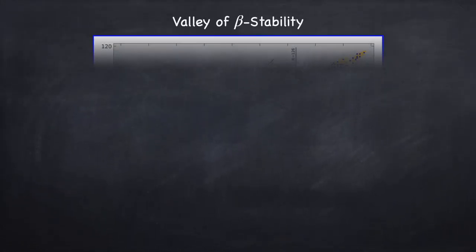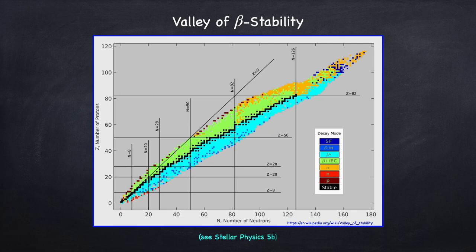If we take a look at what's called the Valley of Beta Stability, here we have a plot of all the nuclei with their charge — the number of protons — on the vertical axis, versus the number of neutrons on the horizontal axis. The black dots are the stable nuclei; this is the Valley of Beta Stability because they're stable against beta decay. Beta particles are electrons and positrons. Above the Valley of Beta Stability we have proton-rich nuclei, and below it we have neutron-rich nuclei.